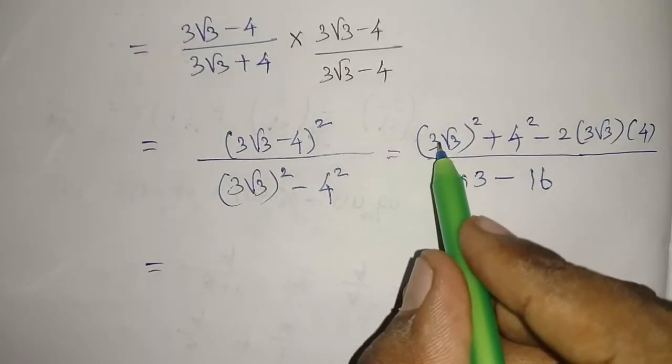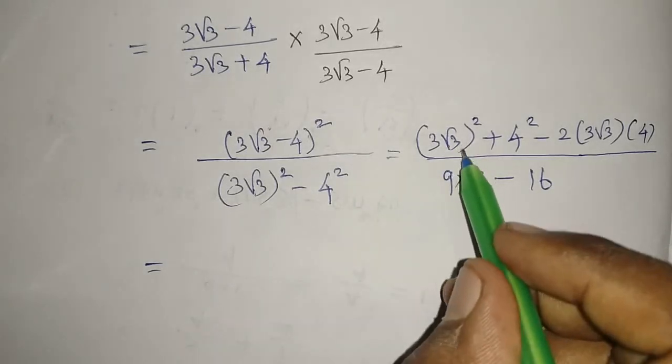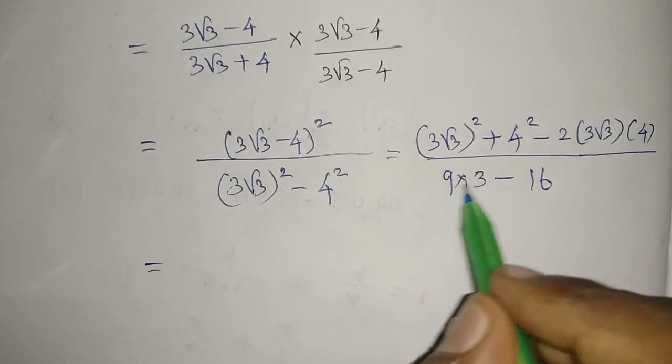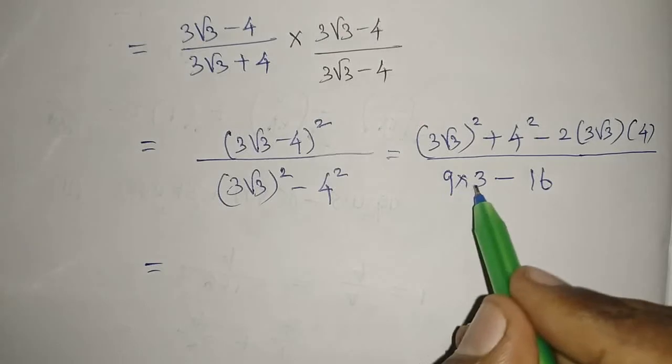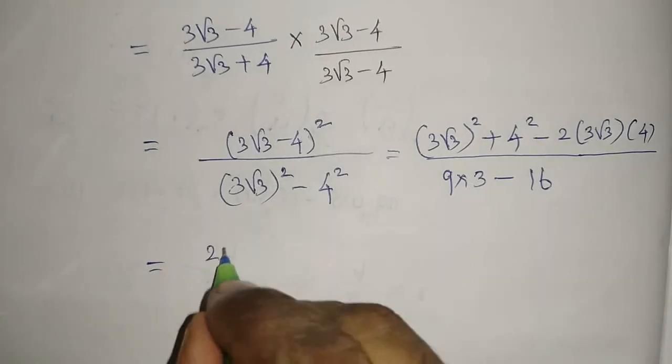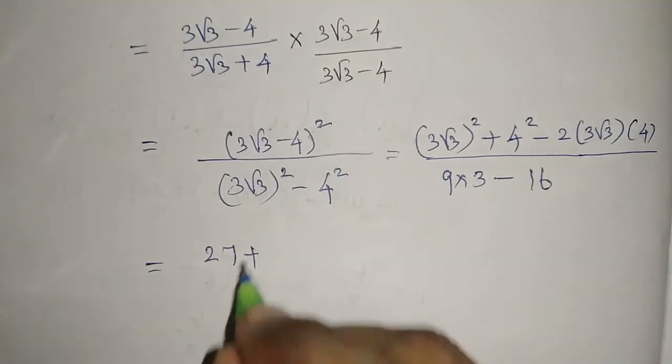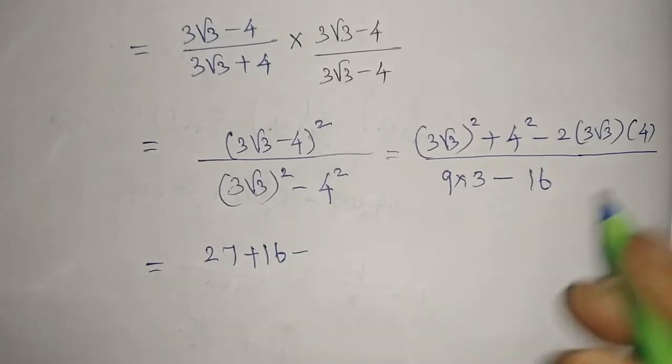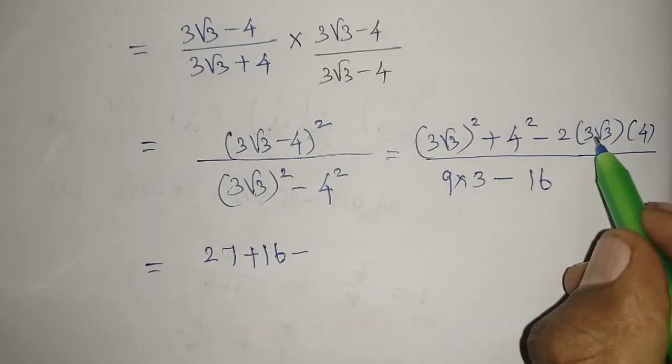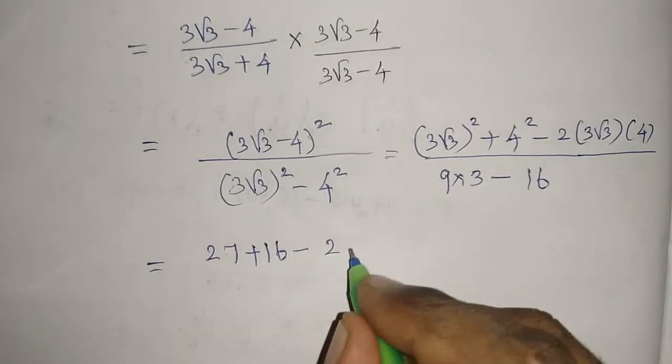In the same step, 3² is 9, times 3 is 27, and 4² is 16. Then minus 2 times 3 is 6, times 4 is 24√3.